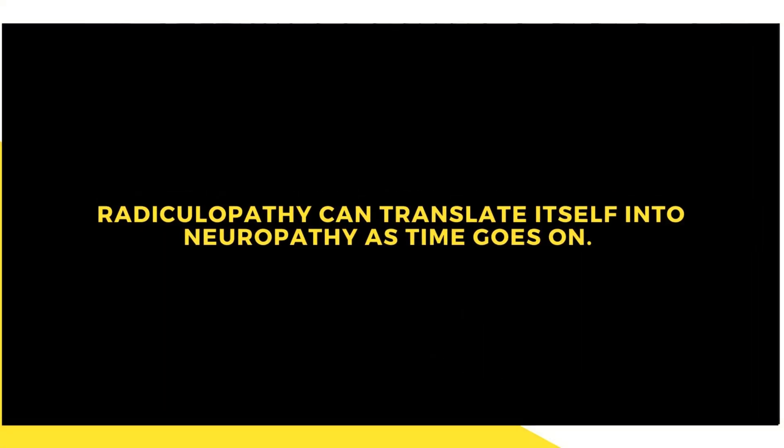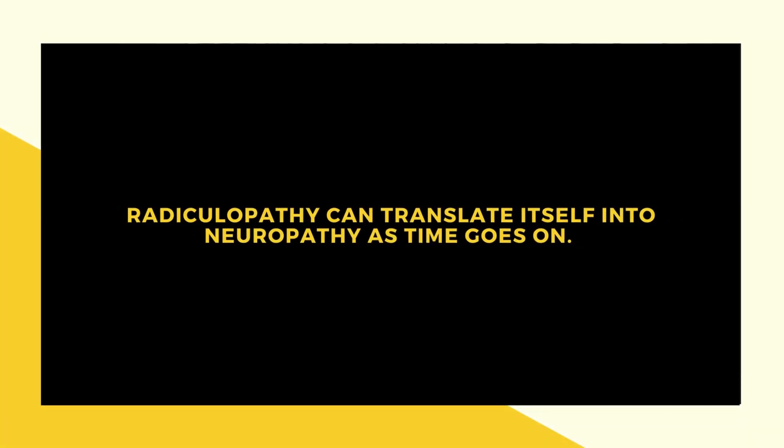Now, neuropathy — neuro means nerve, and -pathy means something's wrong. What it really means is we've got circuit breakers that have tripped and there's not any information getting to the nerves from the body. Usually it's from the elbows down or the knees down. It can be a result of diabetes, alcoholism, infection, chemotherapy, or trauma. Usually, radiculopathy can translate itself into neuropathy as time goes on.